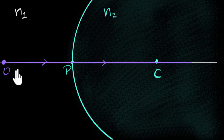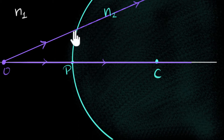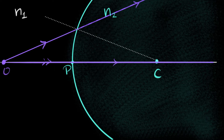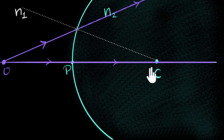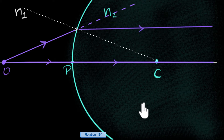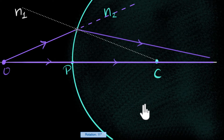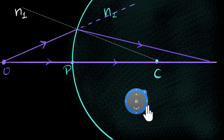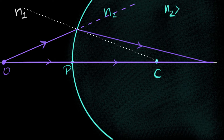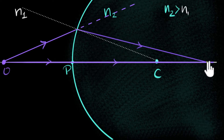To see where the image will be, we have to draw at least one more ray — an oblique ray. This ray will refract here. To figure out exactly how it refracts, you have to draw a normal at this point, and again the normal has to pass through the center of curvature. Let's assume this is a denser medium, so this ray will bend towards the normal. How much it bends depends on how dense n2 is compared to n1. Let's assume it's dense enough that the two rays will eventually meet at some point, creating a real image.